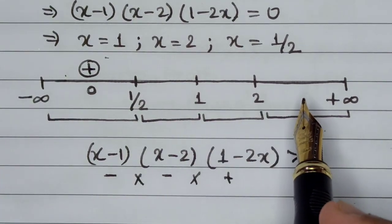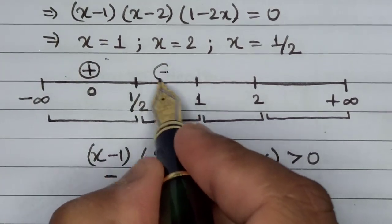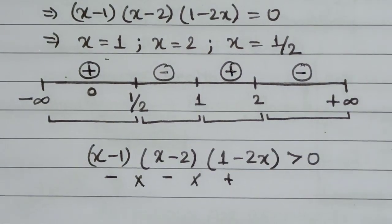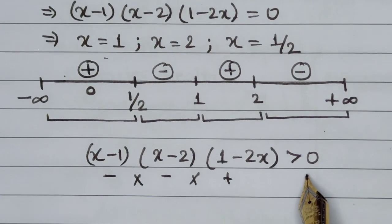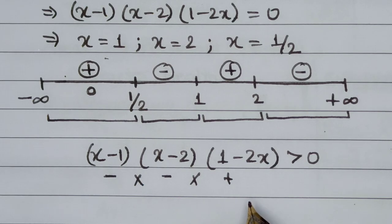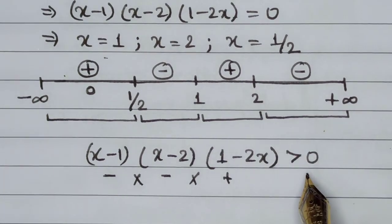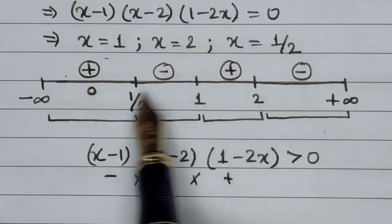As we move into the next range, the sign alternates between plus and minus. So if the first range is positive, this next range will be negative, and so on — positive, negative, positive, negative alternating. Since the question asks for ranges where the entire product is greater than 0, we need to identify which parts are giving a positive sign.